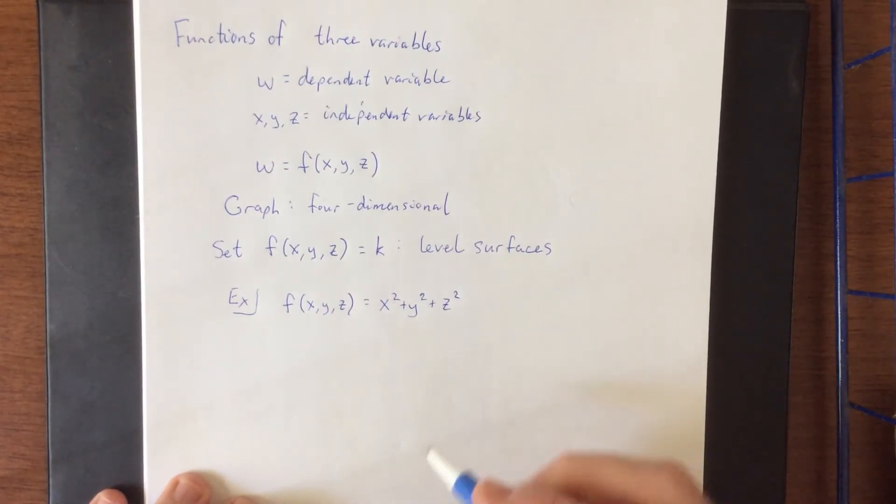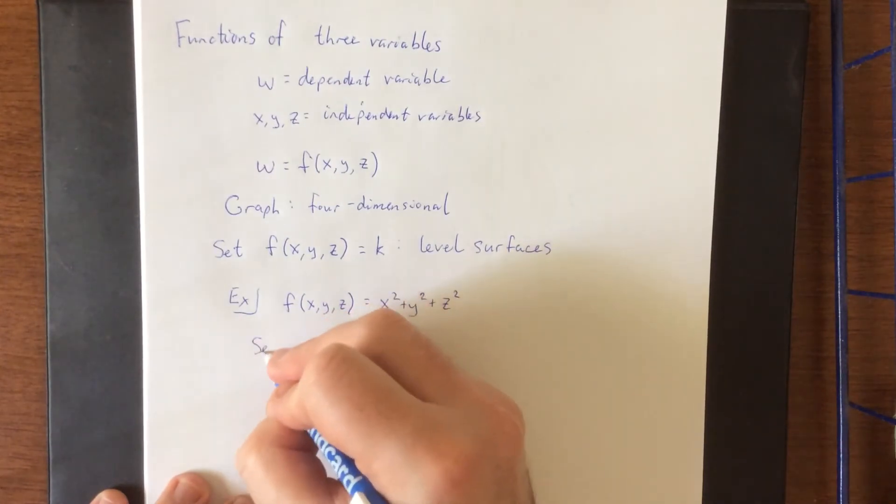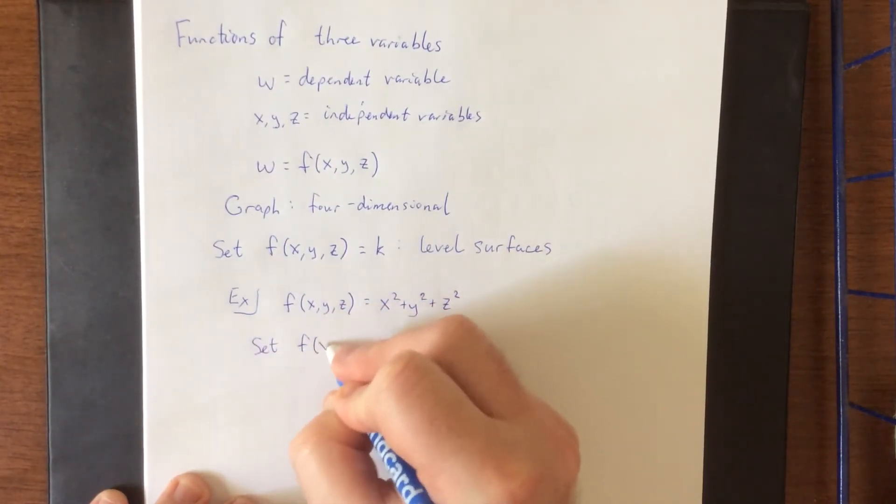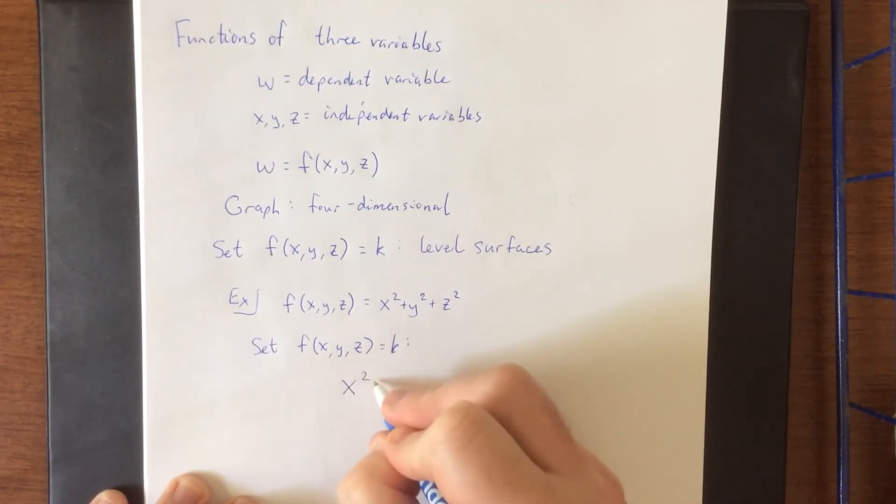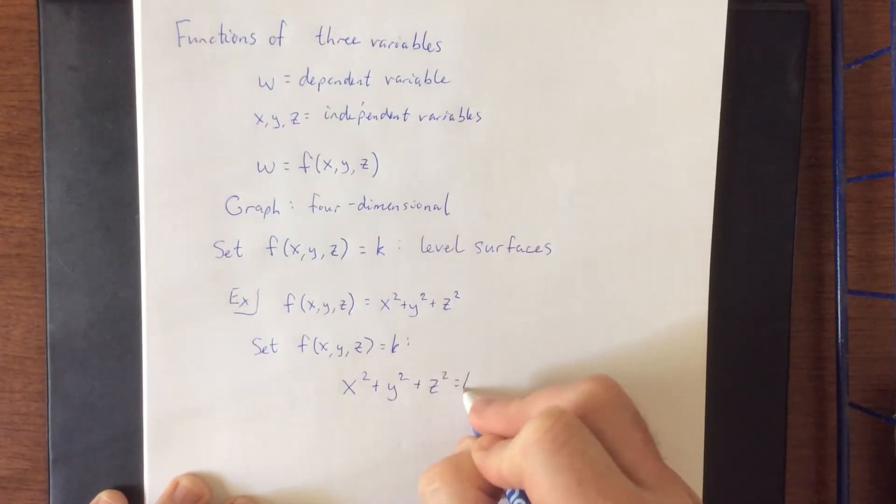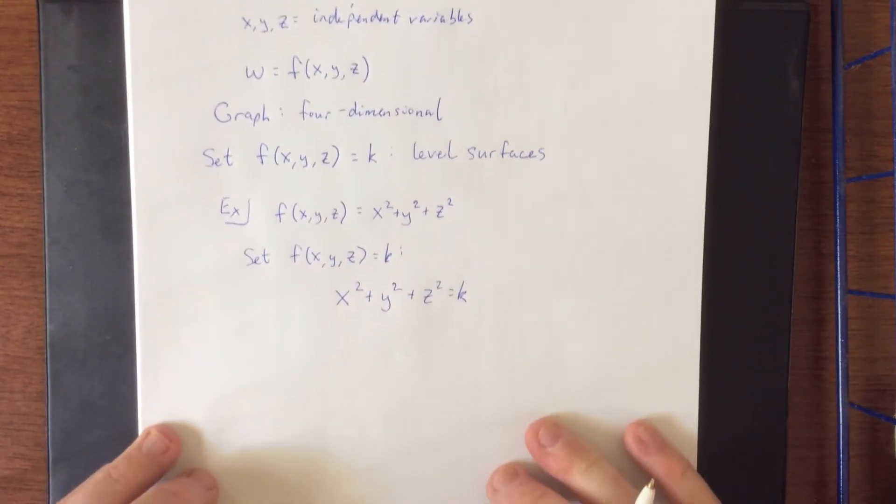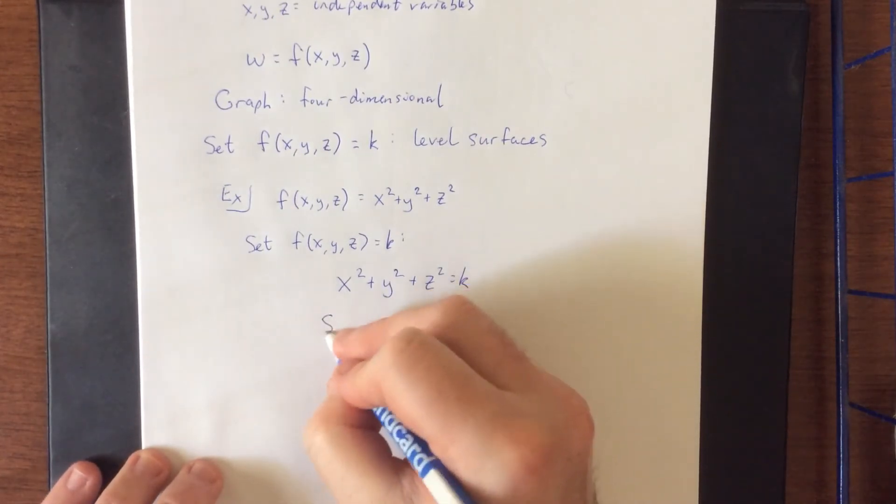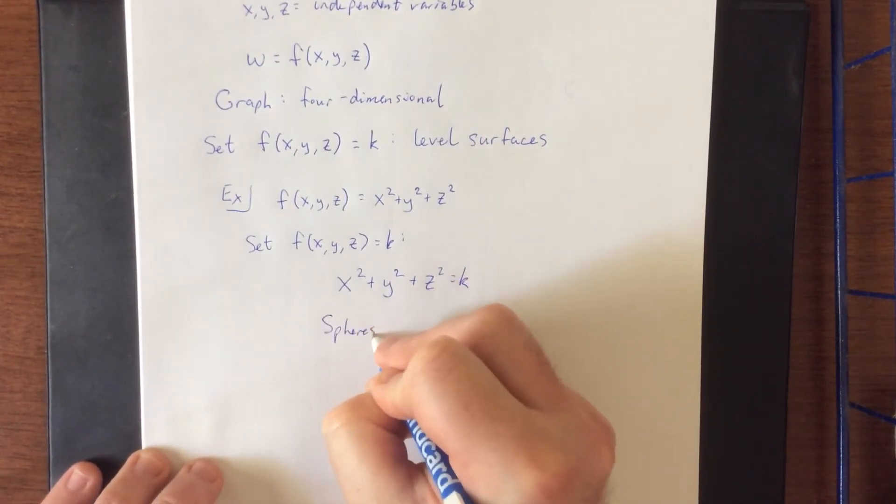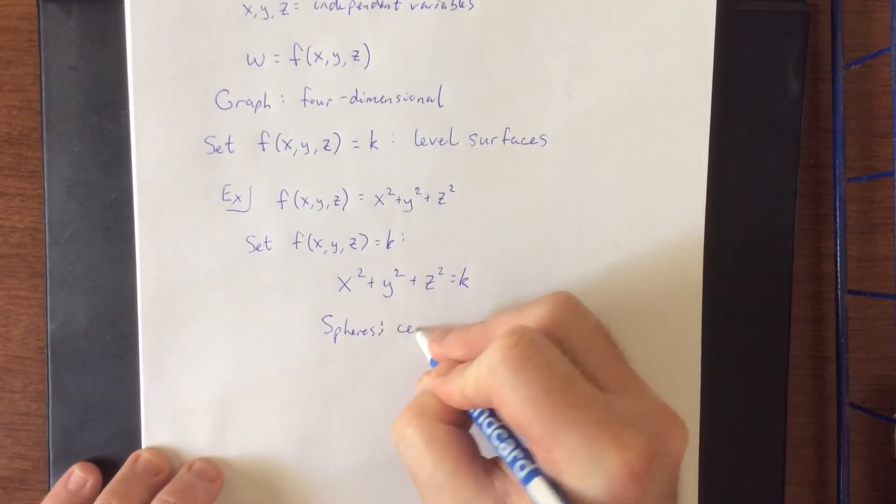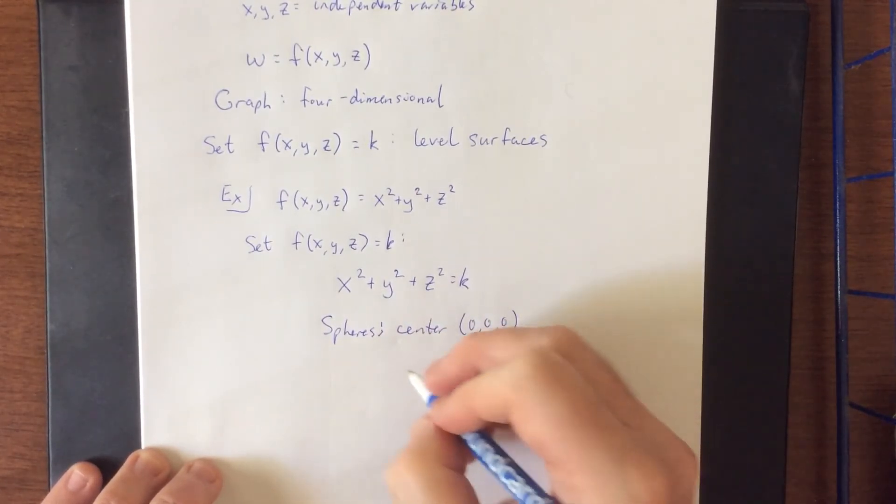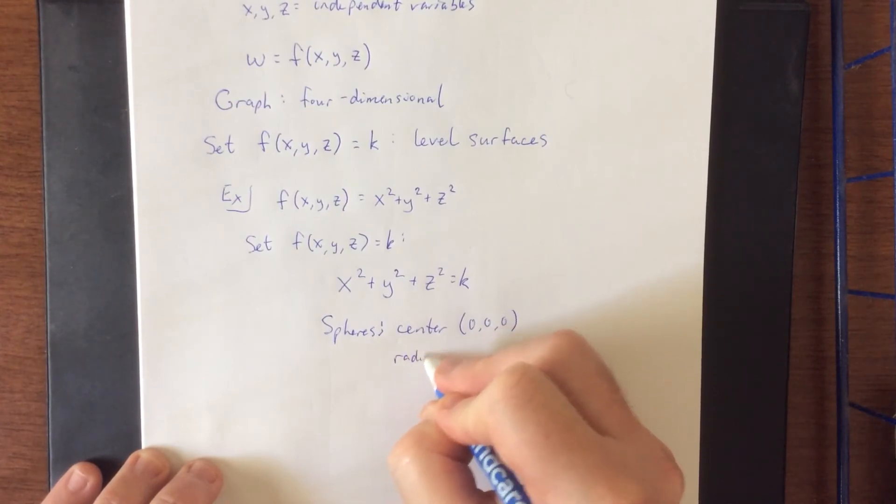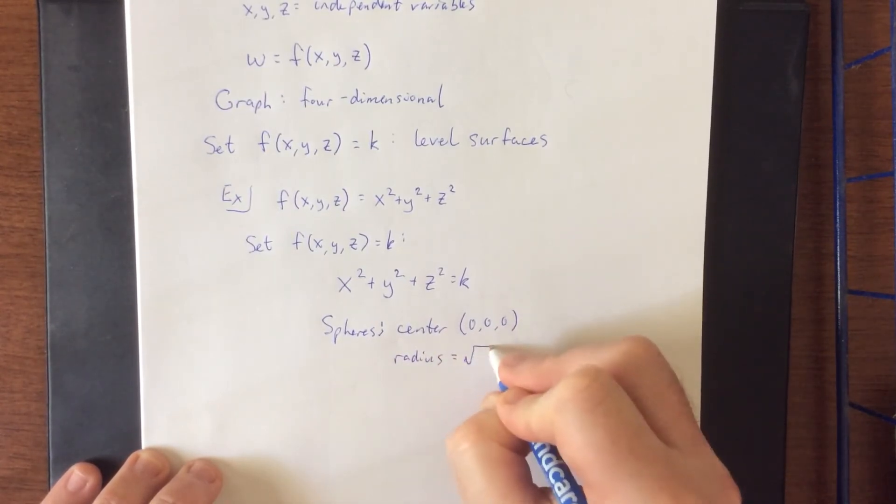In the event that I wanted to create some level surfaces, we'll set f of x, y, z equal to a constant. And we would have that x squared plus y squared plus z squared is equal to k. To describe what these level surfaces look like, these would be spheres with the center at the origin and the radius being equal to the square root of k.